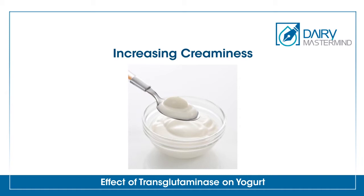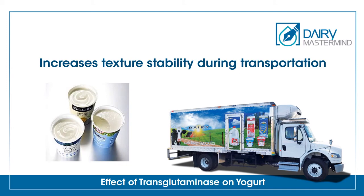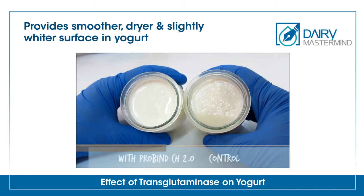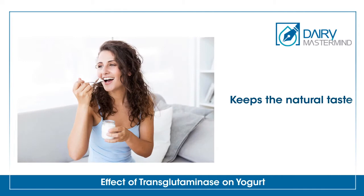TG can also increase creaminess and help to lower the cream content. It increases texture stability during transportation, and provides a smoother, drier and slightly whiter surface in yogurt.